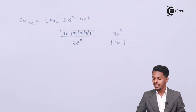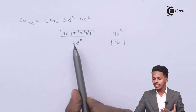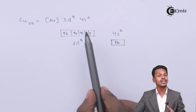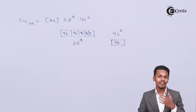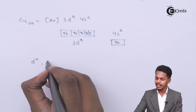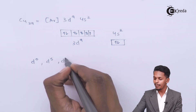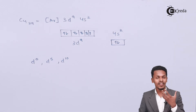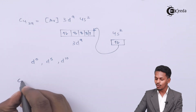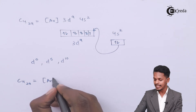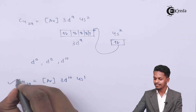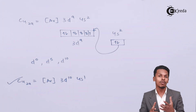The main point is that the 3d and 4s orbitals have a very small energy difference, so one of the electrons can be shifted from 4s to 3d, making 3d achieve a stable electronic configuration. Because if the D orbital is half-filled or completely filled, it is very stable. So one electron shifts to 3d, and copper's electronic configuration becomes [Ar] 3d¹⁰ 4s¹.